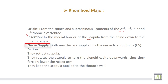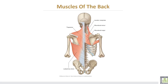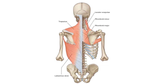Both rhomboid muscles are supplied by the nerve to rhomboids. Their actions are: they retract the scapula, rotate it to turn the glenoid cavity downward — thus they assist in lowering the raised arm — and keep the scapula applied to the thoracic wall. After removing the trapezius muscle, the rhomboids minor and major are visible, along with the levator scapulae above them.